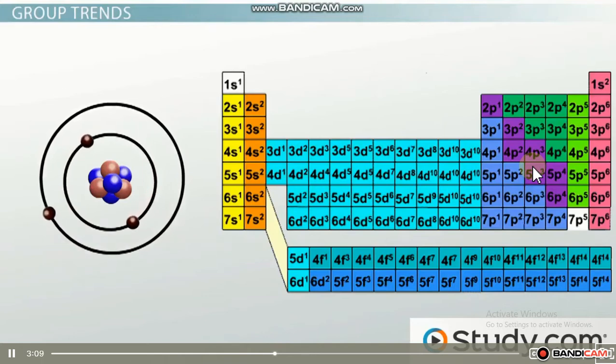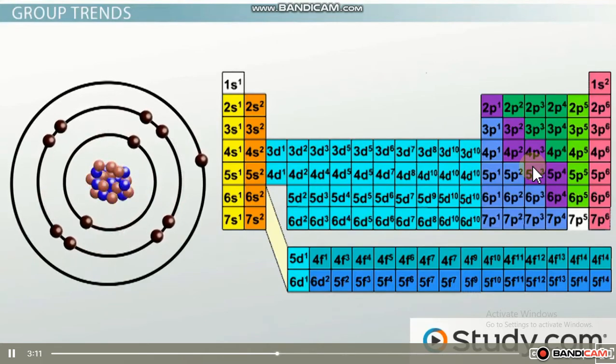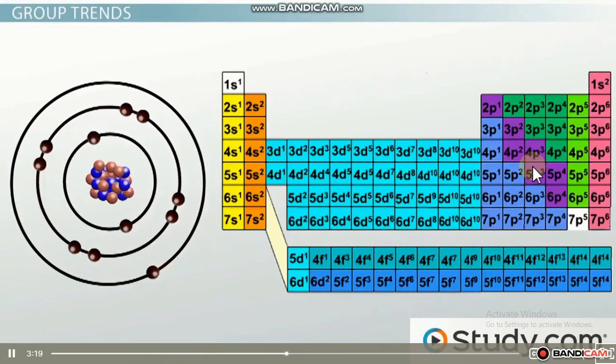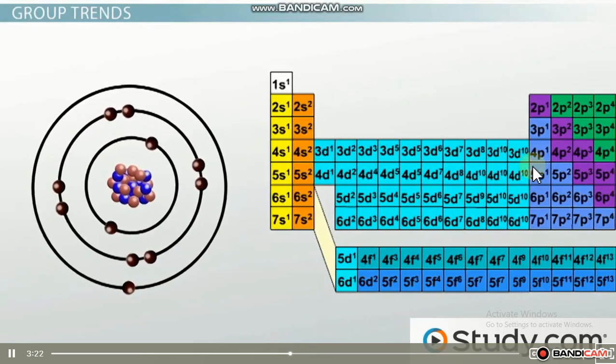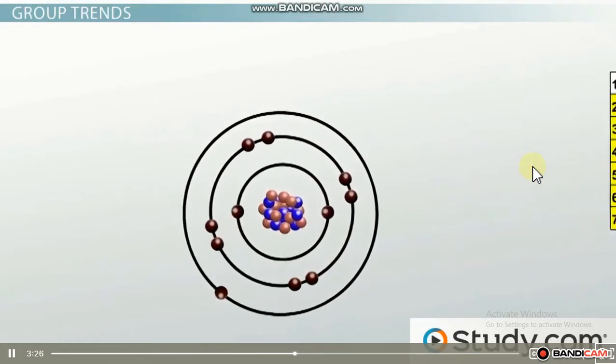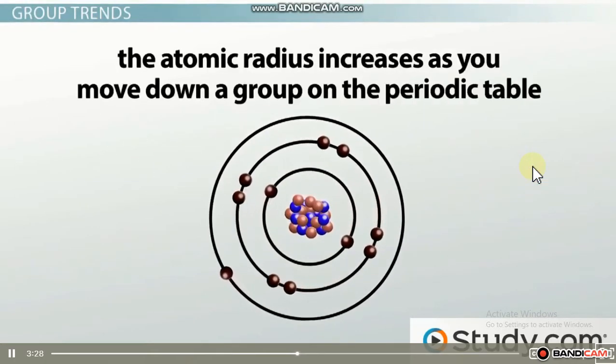Finally, let's compare this to sodium with 11 electrons. Two of them will fill the first level, eight will fill the second level, and one, the valence electron, will need to be added to the newly created third level. Because each added level is farther and farther away from the nucleus, the atomic radius increases as you move down a group on the periodic table.